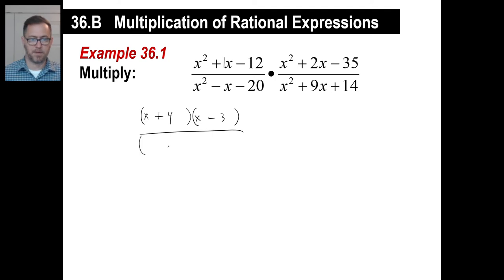Bottom left. Same thing. We're going to do two binomials. X and X. It adds to give me negative 1. So it's going to be, and multiply is going to be negative 20. Another plus and a minus. So that will be plus 4 and minus 5.